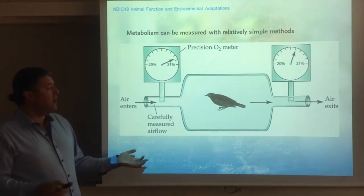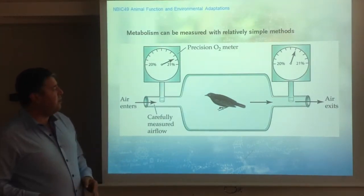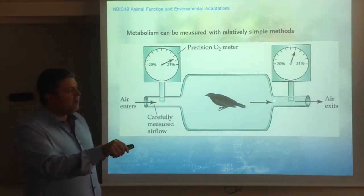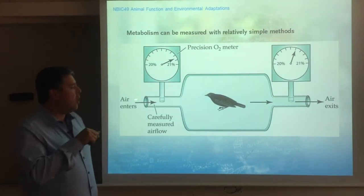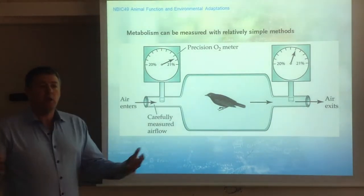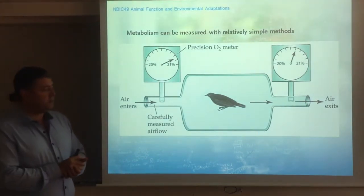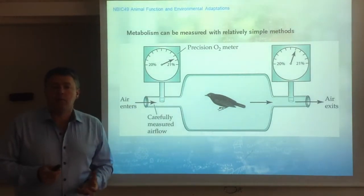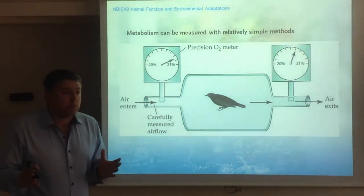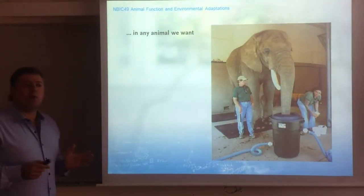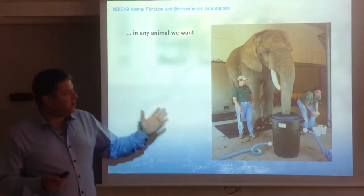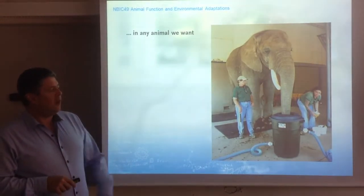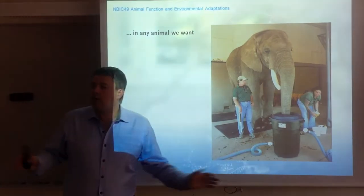How do you do that? You can place an animal in a chamber. Then, by monitoring the concentration of oxygen coming into the chamber and the concentration of oxygen coming out of the chamber, and knowing the flow rate through the chamber, you can calculate how much oxygen the animal is using. There are even some beautiful studies done in elephants using garbage cans. The larger the animal, the larger the container — that's the only thing you need.